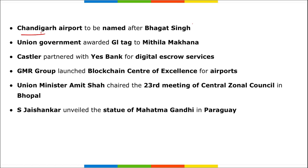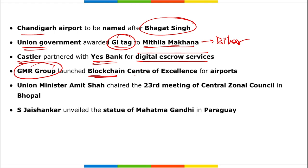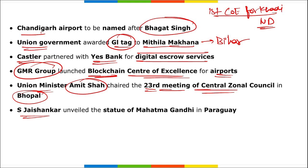The Chandigarh Airport will be named after Bhagat Singh. The Union government awarded a GI tag to Mithila Makhana from Bihar. Castler partnered with Yes Bank for digital escrow services. GMR Group launched a Blockchain Centre of Excellence for airports. The first Centre of Excellence for Khadi was launched in New Delhi. Union Minister Amit Shah chaired the 23rd meeting of the Central Zonal Council in Bhopal.